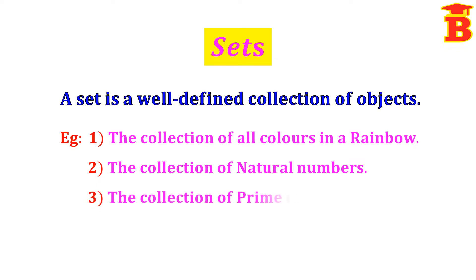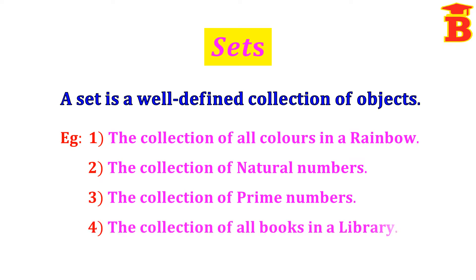The third example is the collection of prime numbers. We know the prime numbers: 2, 3, 5, etc. So this is also a well defined collection, therefore it is a set. The next example is the collection of all books in a library — it is a well defined one, so it is a set. Any collection that is well defined is a set.